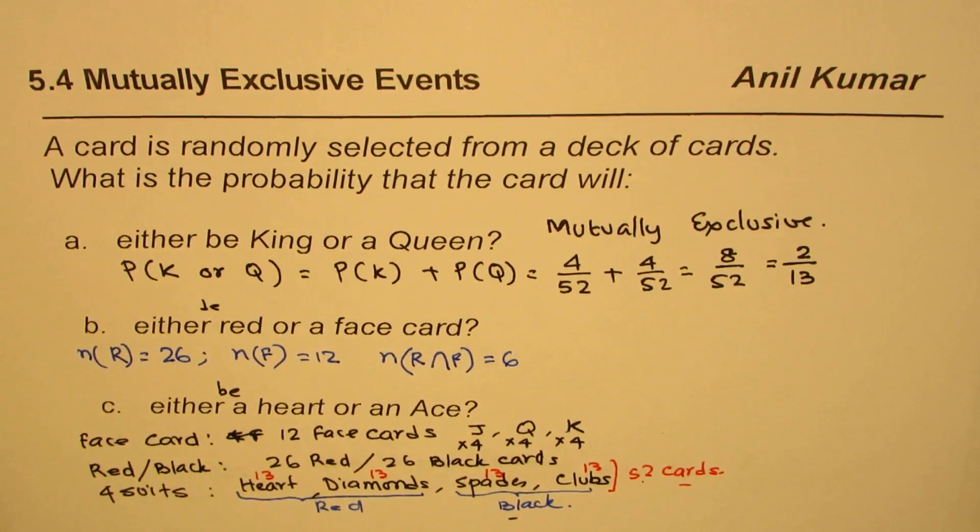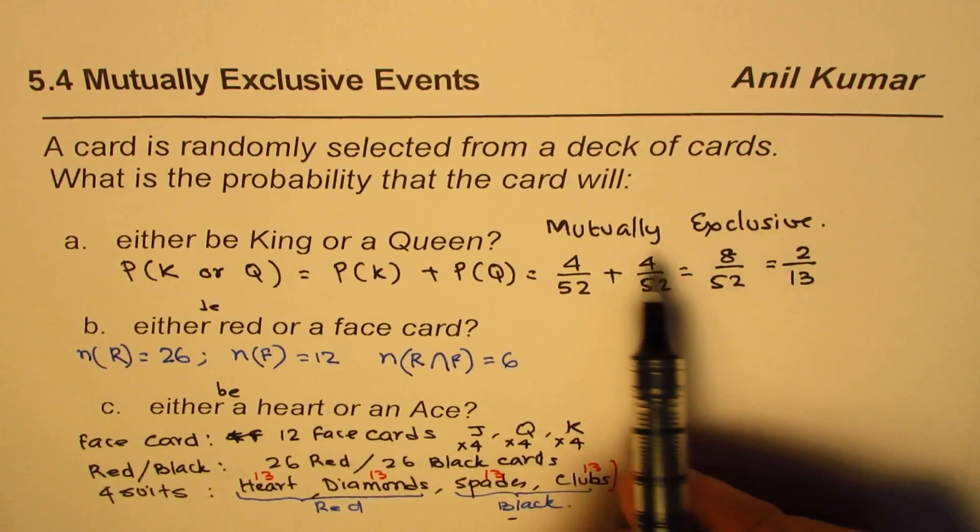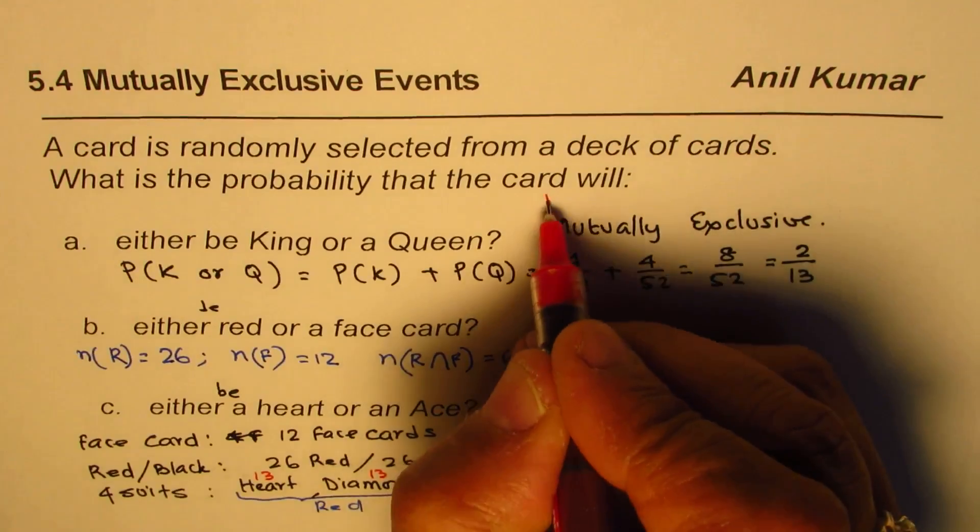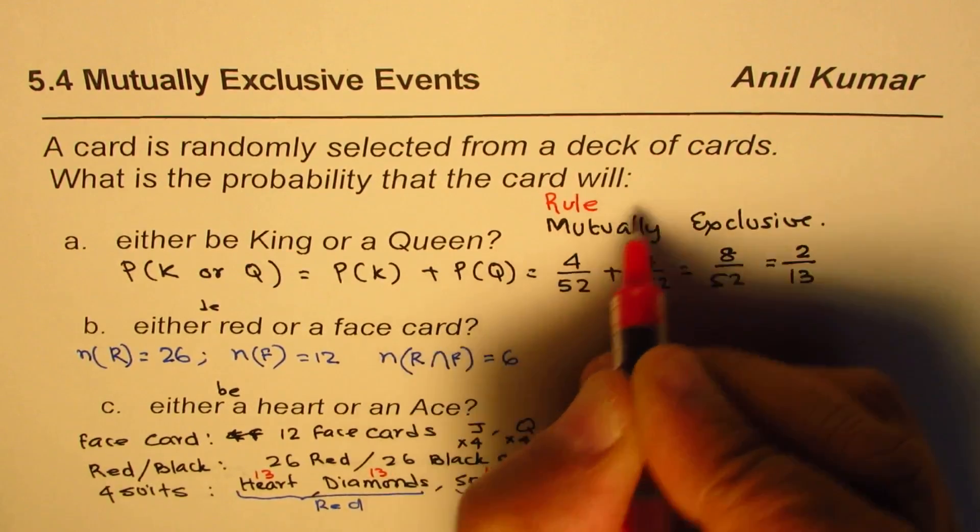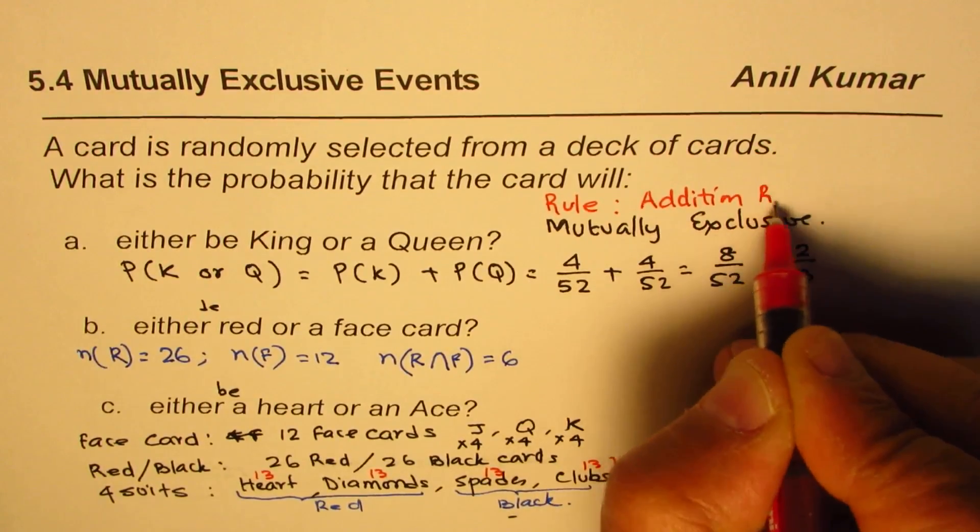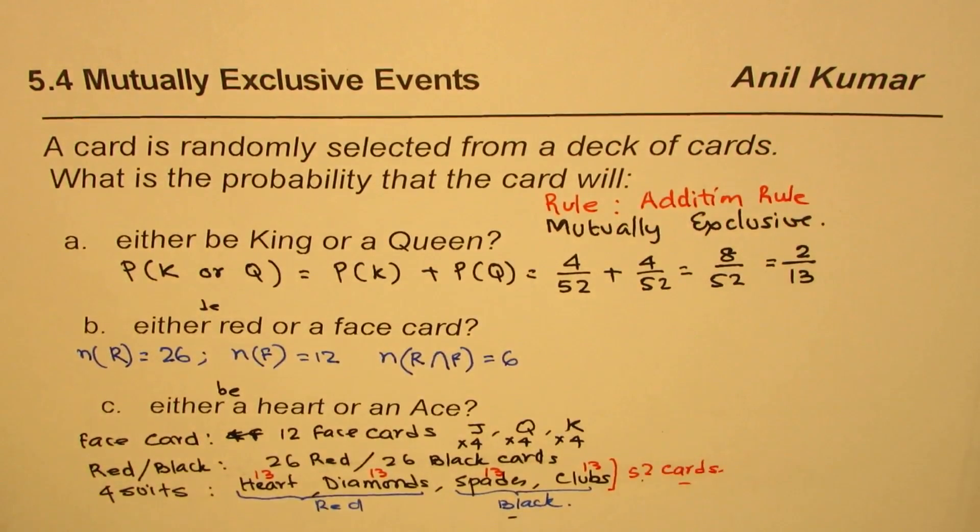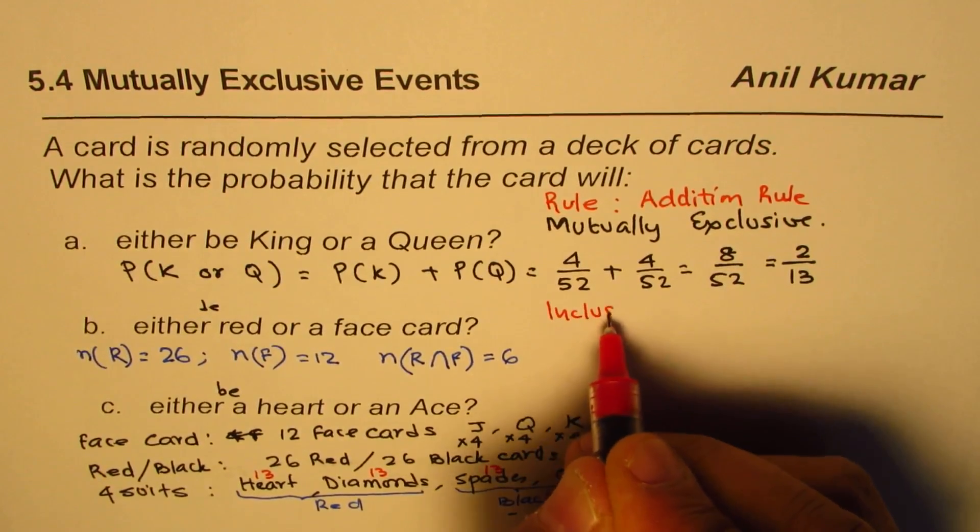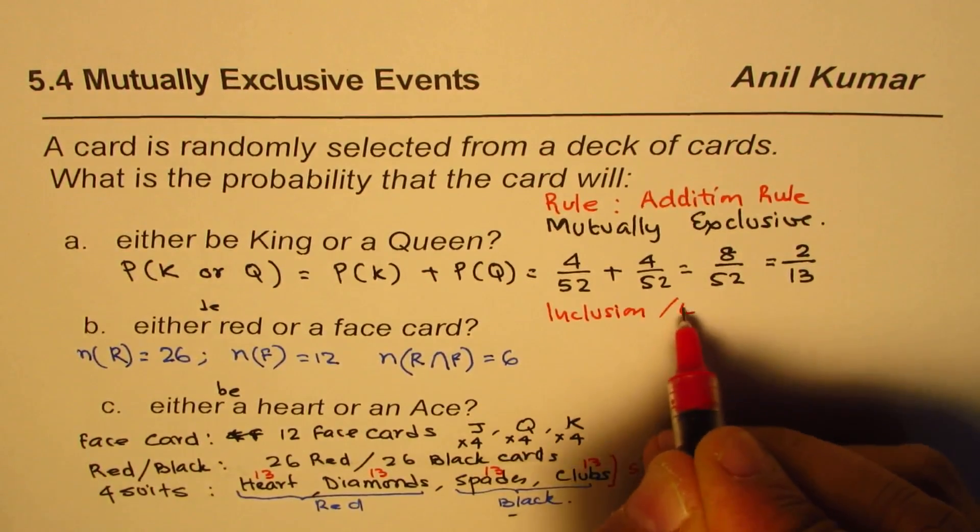Now we can apply the addition rule for mutually exclusive—no, we cannot apply here. We applied the addition rule in part A since it was mutually exclusive. In this case, since we have common elements, think about inclusion and exclusion.